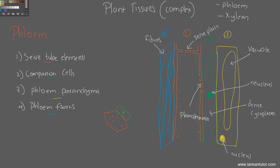Phloem loading and unloading happen through a specialized type of companion cell called transfer cells. The only difference is that these cells have invaginations into the cell body. If asked to write about transfer cells, say everything about companion cells and note that it is a specialized form.